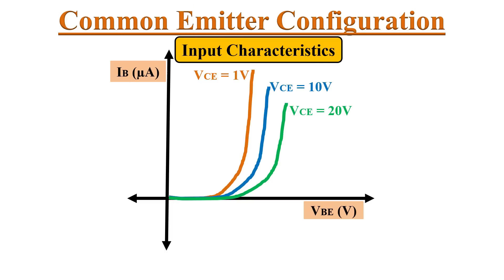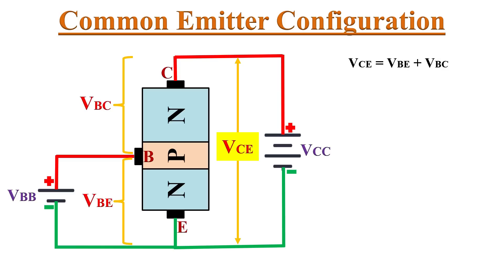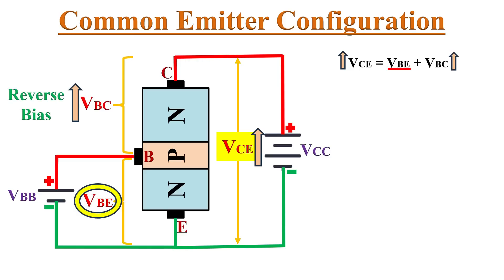One more thing to observe: as we increase the value of VCE, the base current IB reduces. Let's see the reason behind it. Consider that VCE is the voltage between collector and emitter, VBE is the voltage between base and emitter, and VBC is the voltage between base and collector. VCE equals VBE plus VBC. If we keep VBE fixed and increase VCE, then VBC also increases. As VBC increases, the reverse bias between base and collector terminal also increases, which increases the width of the depletion region between the base and collector junction. As we increase VBC, this depletion region's width increases.